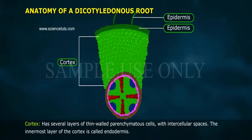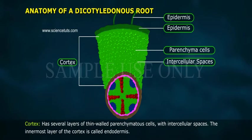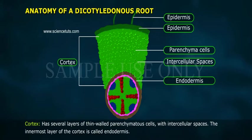Cortex: Has several layers of thin-walled parenchymatous cells with intercellular spaces. The innermost layer of the cortex is called the endodermis.